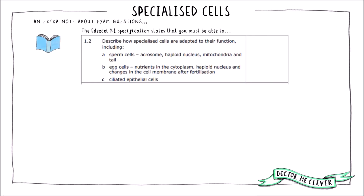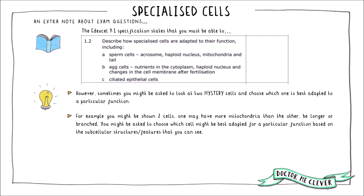Before finishing, it's worth mentioning questions you might get about specialised cells. Whilst the edXL specification mentions the three cell types just described, don't be surprised if you're presented with some unfamiliar and unlabelled cells and asked to choose which mystery cell is best adapted to a particular function. For example, you might be presented with two mystery cells, one of which contains more mitochondria than the other, or is longer, or more branched, and asked to decide which cell is most likely to be a muscle cell or a nerve cell based on the structures or features you can see.